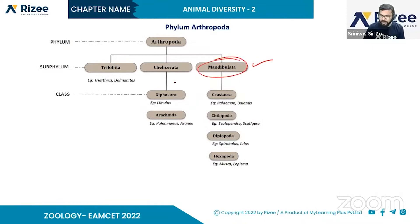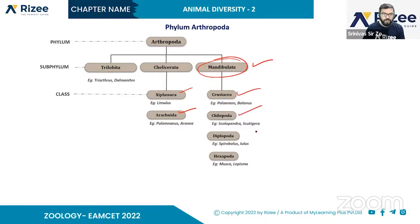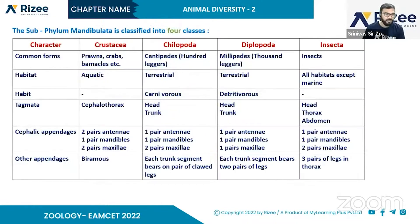Next topic is Mandibulata. Divided into four classes: Crustacea, Chilopoda, Diplopoda, and Hexapoda. In the summary table, common forms and characters are listed for each class, starting with Crustacea.